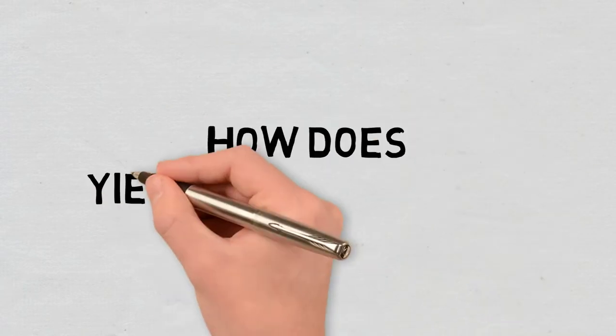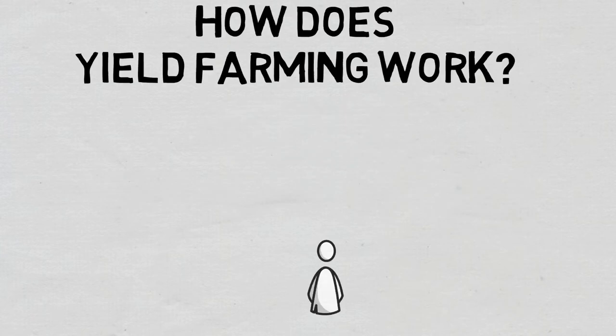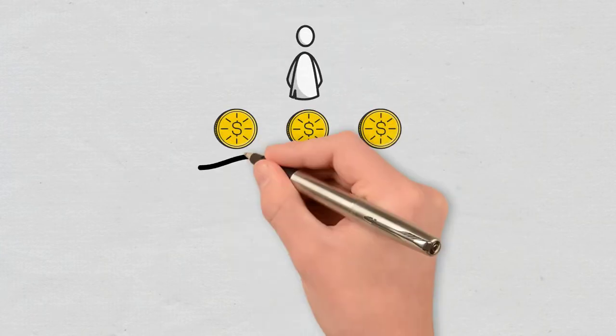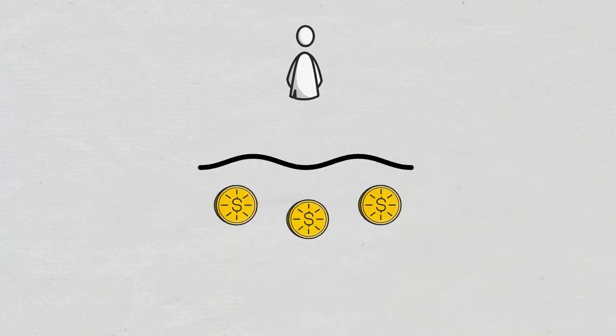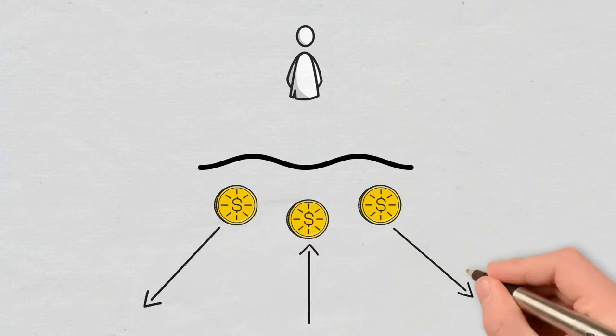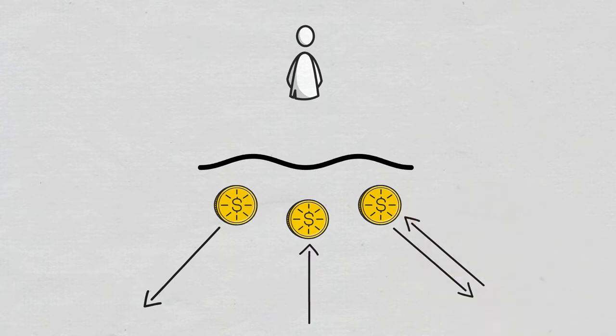How does yield farming work? The first step in yield farming is adding funds to a liquidity pool. Such a pool powers a marketplace where users can borrow, lend, or exchange tokens.